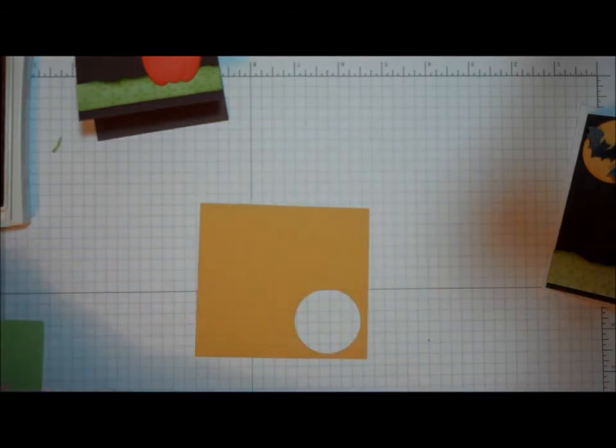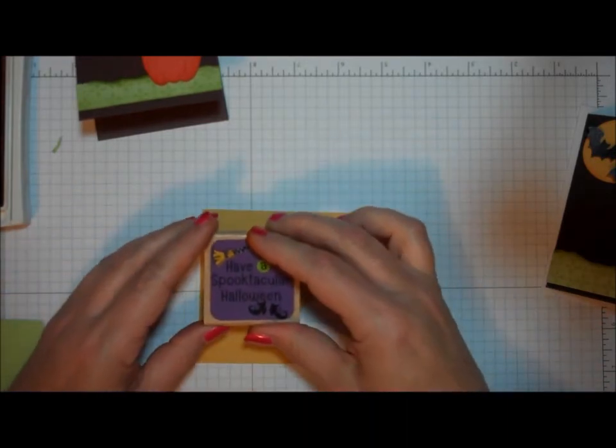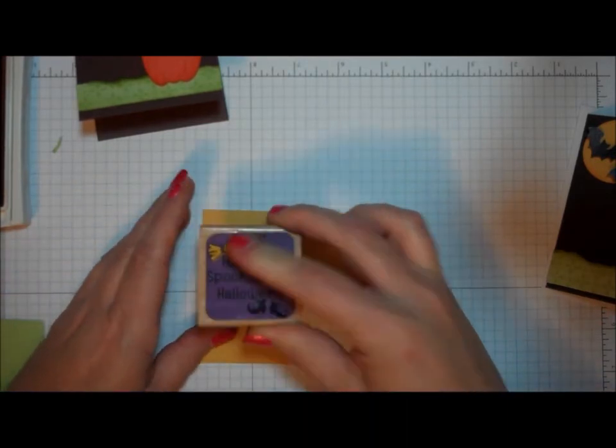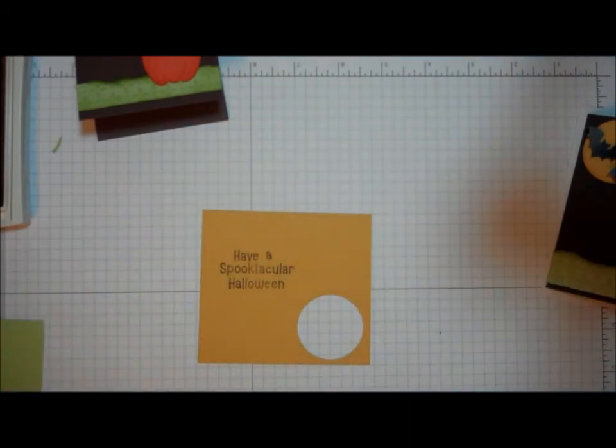I'm going to ink my stamp up with brown ink. This is chocolate chip colored ink. I'm going to stamp right on that piece of paper. And now I'm going to use a punch to punch this out.